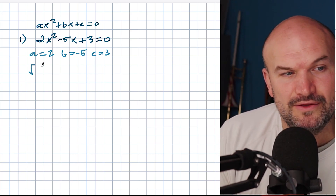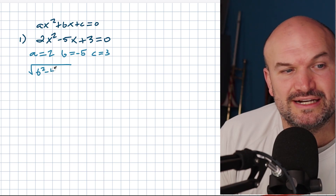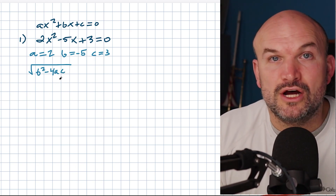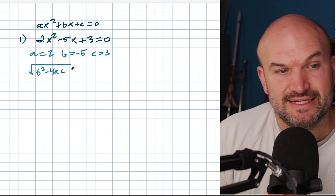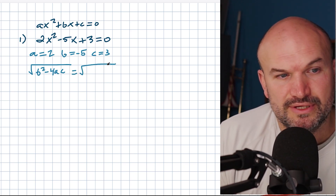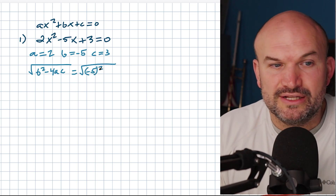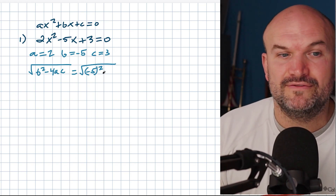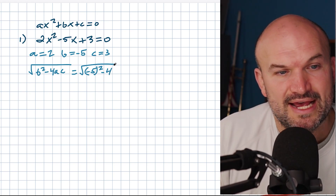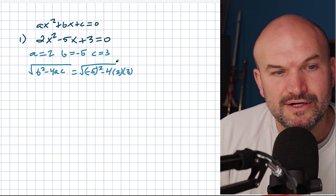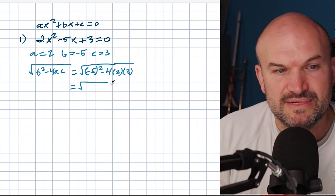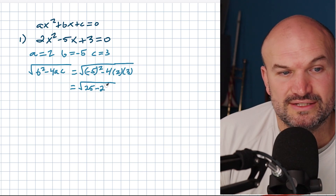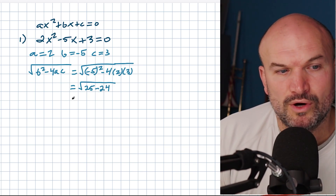Next, I like to identify the discriminant — everything under the radical in the quadratic formula — because it tells you what types of solutions you'll have. So I take b squared minus 4ac. B is negative 5, so I write negative 5 in parentheses squared — that's positive 25, not negative 25. Then minus 4 times 2 times 3: negative 4 times 2 is negative 8, times 3 is negative 24. So 25 minus 24 equals 1, and the square root of 1 is just 1.